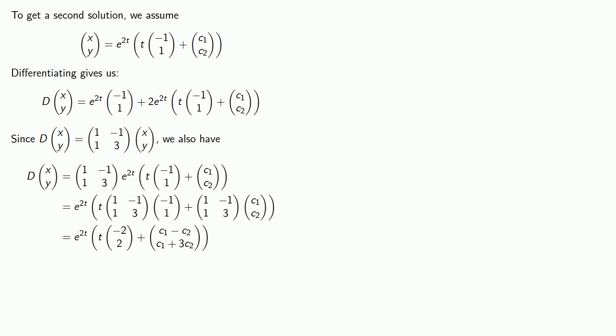So comparing our two equations, we see that the first components are going to be minus e to power 2t minus 2t e to power 2t plus 2e to the 2t times c1. That's our first component from here. Must be equal to minus 2t e to power 2t plus e to power 2t times c1 minus c2.